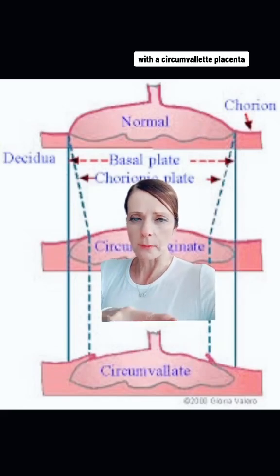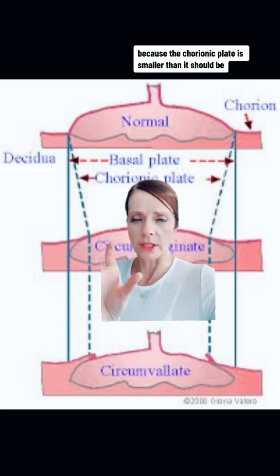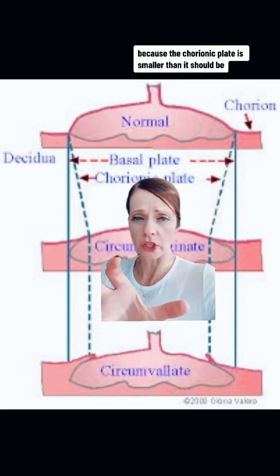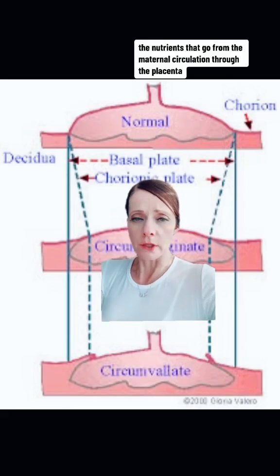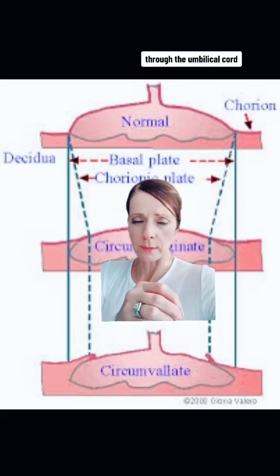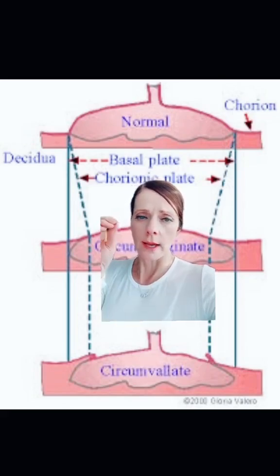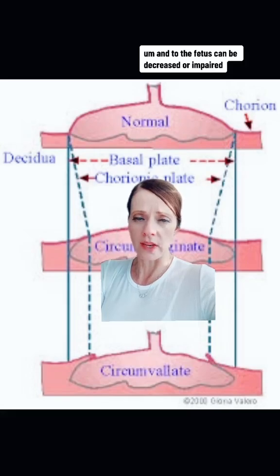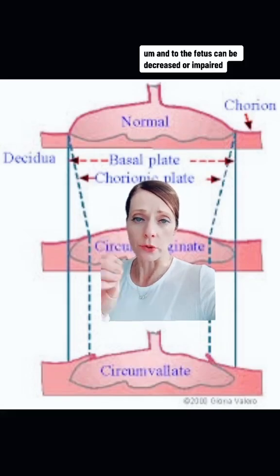With a circumvallate placenta, because the chorionic plate is smaller than it should be, the nutrients that go from the maternal circulation through the placenta, through the umbilical cord, and to the fetus can be decreased or impaired.